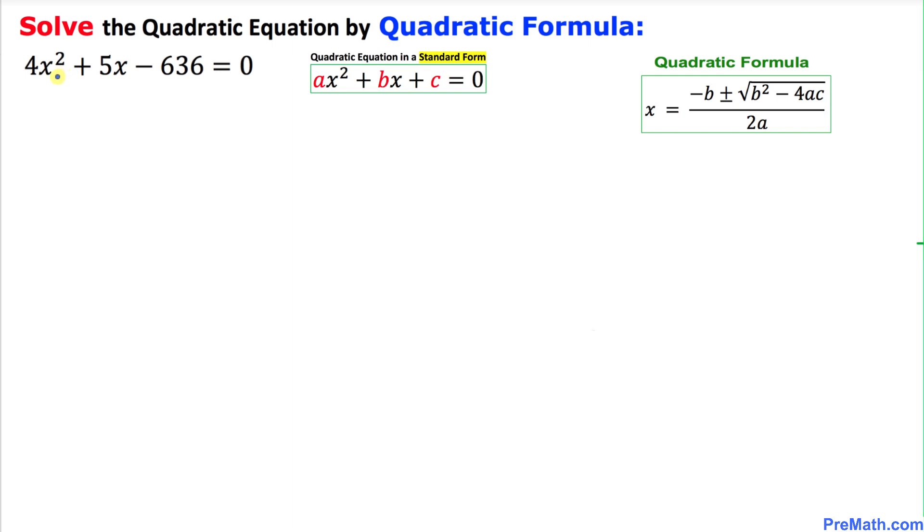Let's go ahead and compare our given quadratic equation with this standard form. We can see that our a value is going to be positive 4, b value is positive 5, and our c value is negative 636.